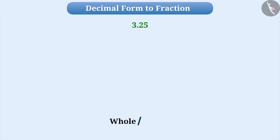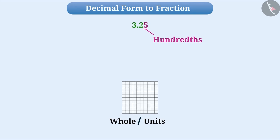we will consider 1 whole square. To represent the numbers till hundredths, we will divide this into 100 equal parts.